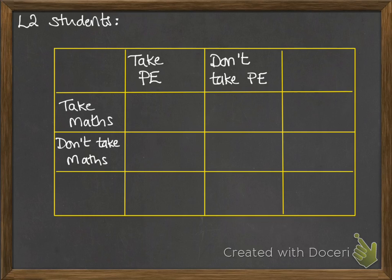Okay, now we're going to have a look at another one. This is level 2 students and whether they take PE or don't take PE and whether they take maths or not. So with this one we're given some information. First of all that there are 418 level 2 students.